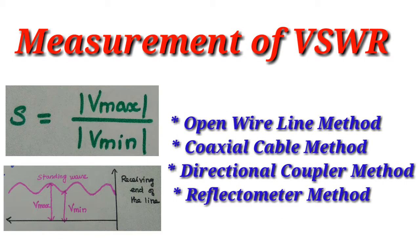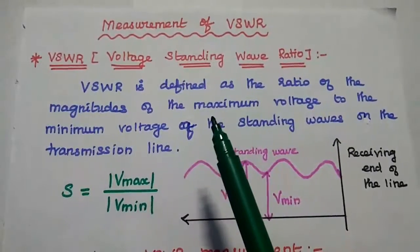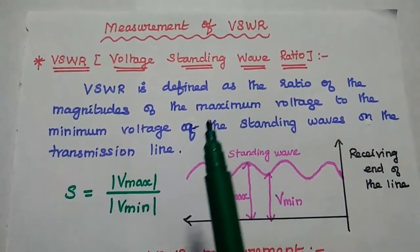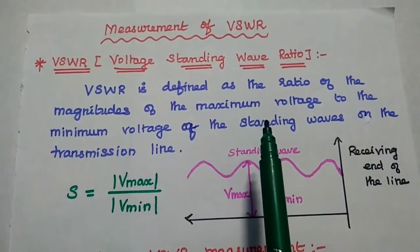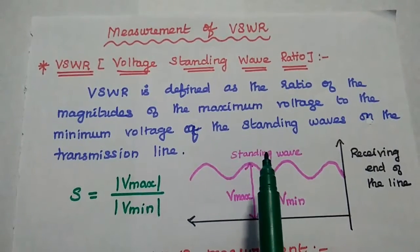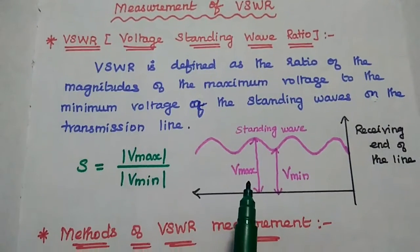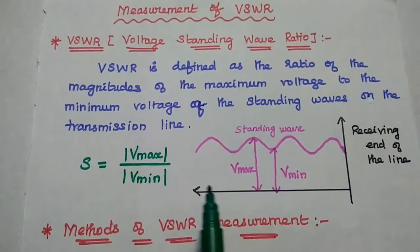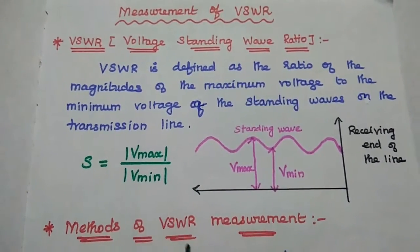Dear students, now we are going to discuss measurement of VSWR on transmission line. VSWR, i.e. voltage standing wave ratio, is defined as the ratio of the magnitudes of the maximum voltage to the minimum voltage of the standing waves present on a transmission line. The standing wave consists of maximum voltage and minimum voltage along the line. The ratio of Vmax to Vmin is known as standing wave ratio.